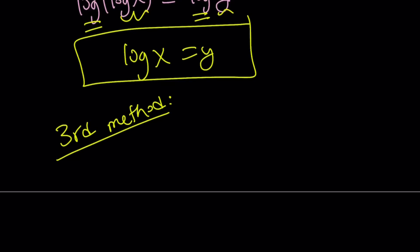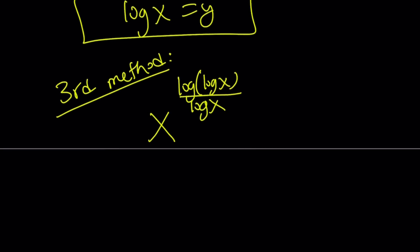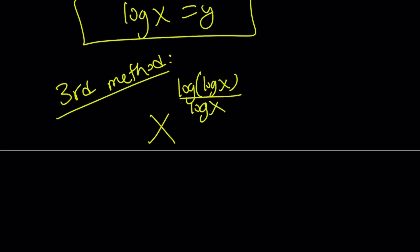Anyways, so we're trying to simplify third method, x to the power log log x over log x. I mean, to be honest with you, when I look at an expression like this, I can't tell right away that hey, this is log x. Can't you see? It's like super duper easy. Well, sometimes it's easy to see, sometimes it's not. Anyways, it's not super obvious to me, to be honest with you.